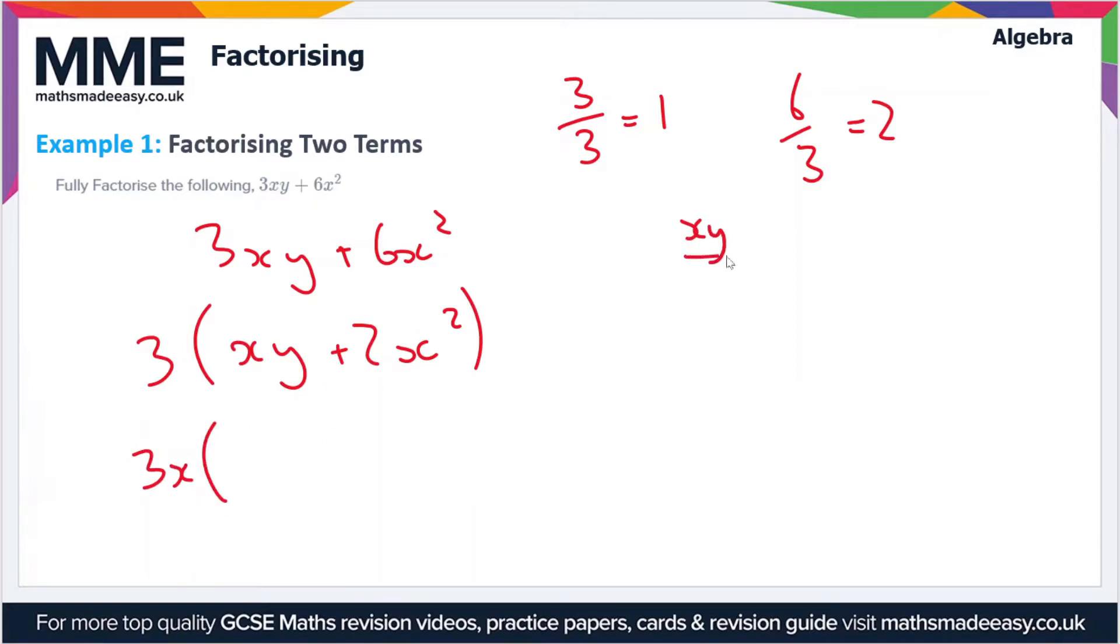Well if we divide xy by x we're going to be left with y. And if we divide 2x squared by x we're going to be left with 2x. So we're going to be left inside the brackets with y plus 2x. Now there are no common elements or common factors of y and 2x. So this is now in the factorised simplest form.